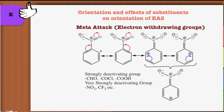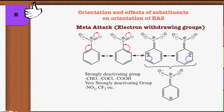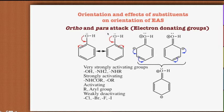These are called deactivating groups because they deactivate the ring towards electrophilic aromatic substitution reaction, making the rate of reaction slower than electron-donating groups. In summary, electron-withdrawing groups decrease the rate of electrophilic aromatic substitution. Ortho and para orientation is shown by electron-donating groups. Taking phenol as an example — the OH group, when attached to the ring, shows electron-releasing characteristics due to resonance. The resonance structures show that the OH group increases electron density at the ortho and para positions.